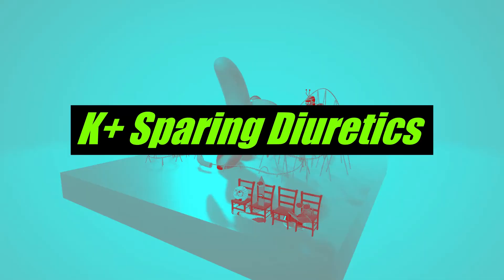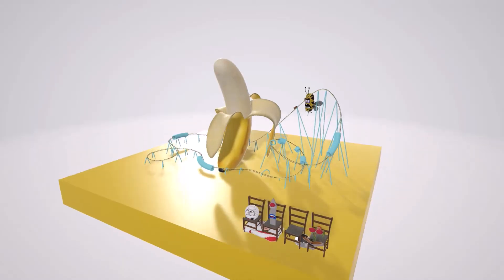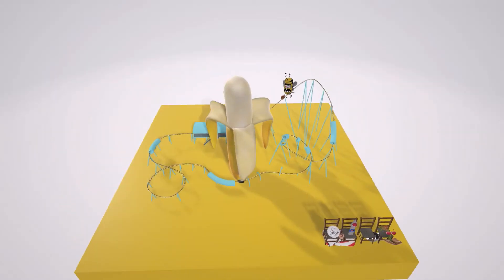Alright, in this scene we're going to talk about the potassium sparing diuretics, and it's going to be represented by this banana amusement park over here. Banana in our videos reminds us of potassium, so this scene is going to remind us of potassium sparing diuretics.